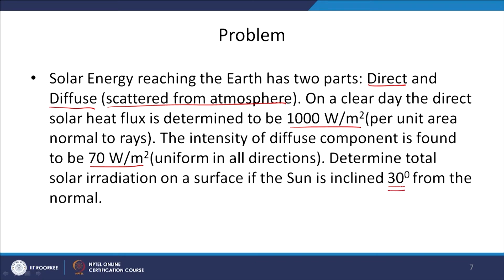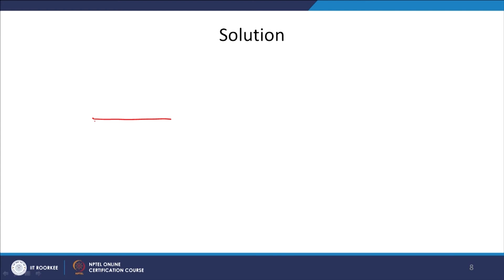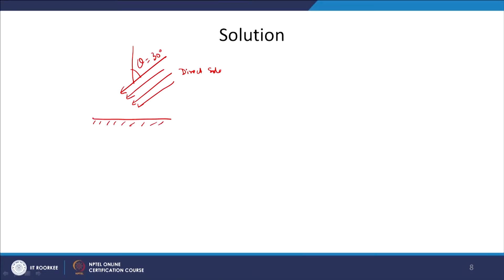We have to determine total solar irradiation on a surface if the sun is inclined 30 degrees from the normal. So the surface is shown, and the direct solar radiation is coming at an angle of 30 degrees from the normal direction. This normal direction changes over the duration of the day, but at this instant theta is given as 30 degrees. The direct solar radiation value is given as 1000 W/m² normal to the rays.